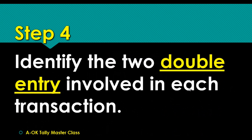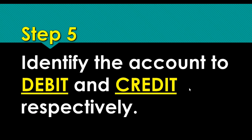Step number four: we need to identify the double entry involving each transaction. We learned these basic accounting principles in level 100 or level 200. You always have to know that there are accounts involved — the double entry principle. You need to know which accounts are involved for every transaction, and you need to identify the account that you are debiting and the account that you are crediting.